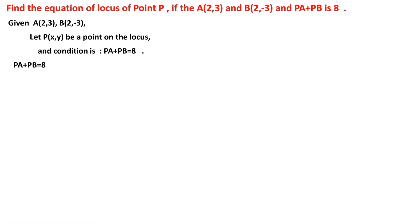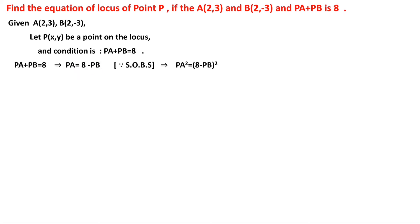Squaring both sides: PA² = (8 - PB)². Expanding using (a - b)² = a² - 2ab + b²: PA² = 64 + PB² - 16·PB. Now we will find PA² and PB² using the distance formula.